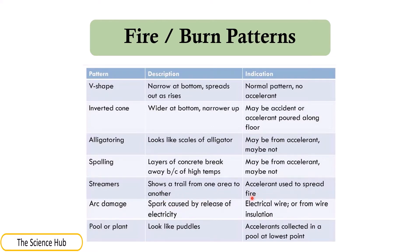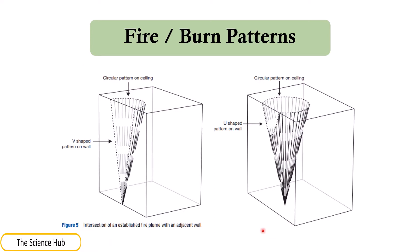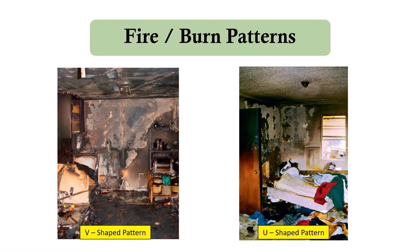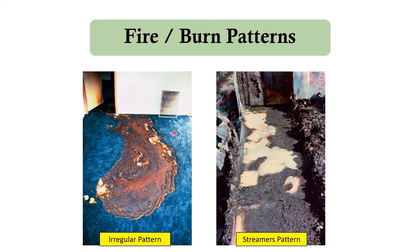Here you can see arc damage including sparks caused by release of electricity, with indication from electrical wire or wire insulation. The pool or plant pattern looks like puddles where accelerants collect at the lowest points. You can also see the V-shaped and U-shaped burn patterns, circular patterns on the ceiling, and images showing irregular patterns and streamers patterns.